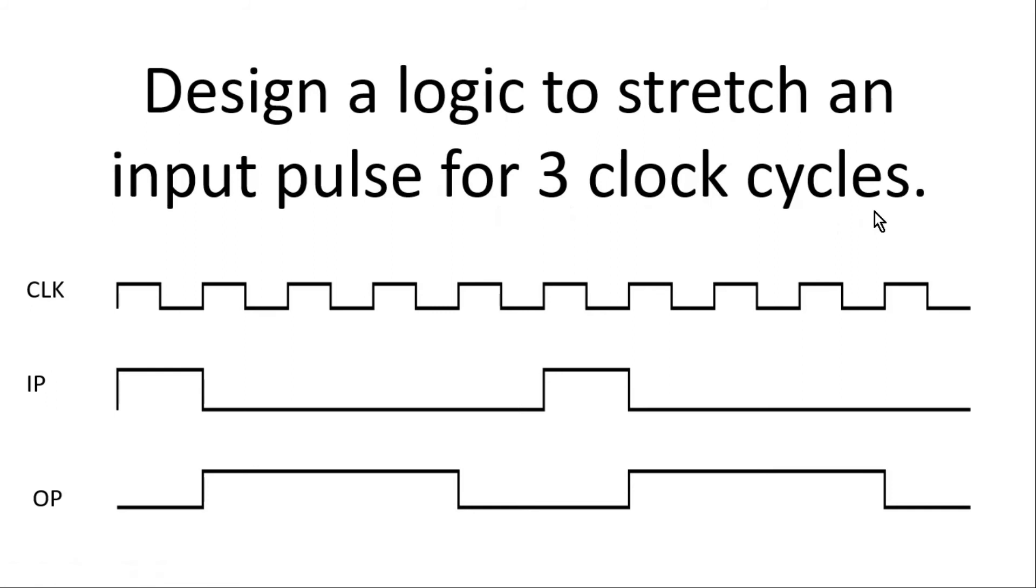Let me explain it in more detail with the help of these waveforms. This is the clock signal which is input to our logic, and this is the input signal which will always be in the form of pulses as shown in the figure. Whenever there will be a pulse on this input signal, on the output a pulse should be generated, but it should last for three clock cycles as shown in the figure.